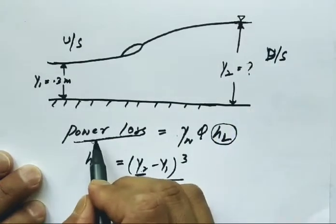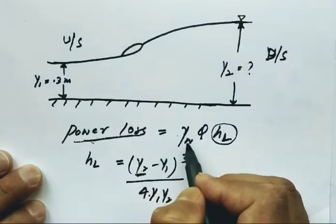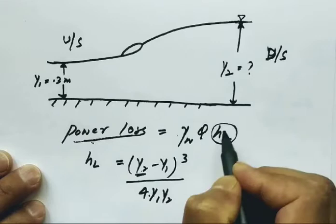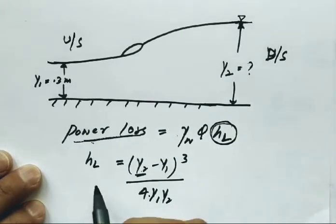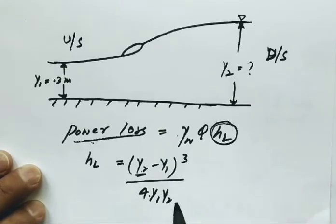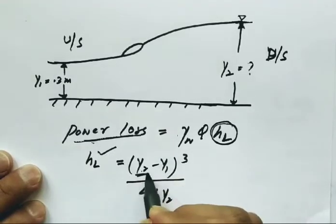The power loss formula is gamma (unit weight of water) times discharge into head loss. So the first step is to find head loss.